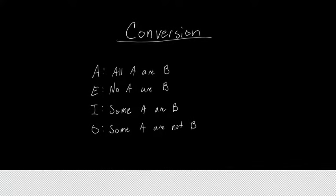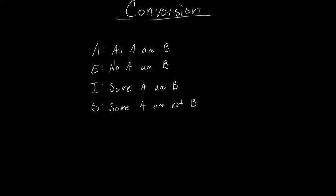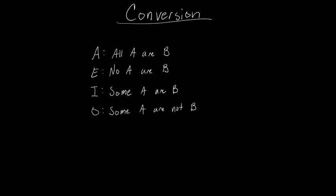Let's start with conversion, since it's the easiest one to do. It's actually very straightforward. All you need to do to get the converse of a categorical statement is just swap the subject and predicate. So if you have an A-type statement such as 'all A are B', the converse of that statement is just 'all B are A'.